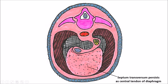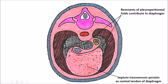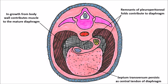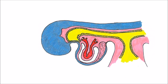The septum transversum is going to become the central tendon of the diaphragm. The pleuroperitoneal folds contribute a little bit laterally and posteriorly by fusing completely to the septum transversum, and then the majority of the muscle in our diaphragm actually comes from the body wall — it grows in from the outside. Failure of this process, particularly the pleuroperitoneal folds failing to fuse to the septum transversum, can result in herniation of gut into the thorax during development. The abdominal contents are under great pressure, and if there's a hole because the pleuroperitoneal folds didn't close properly, the gut will push up — usually into the left pleural cavity — compressing the lungs and possibly pushing the heart to the right. This is incompatible with life outside the womb and must be caught early and corrected in utero.